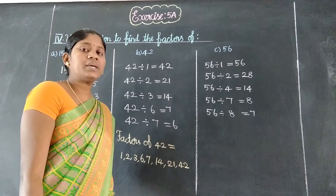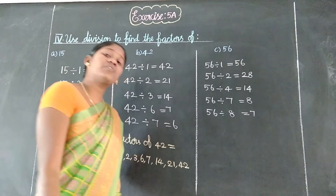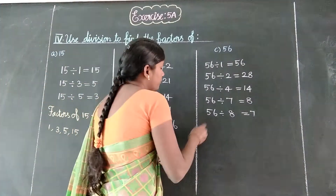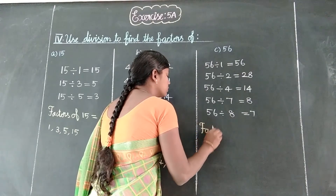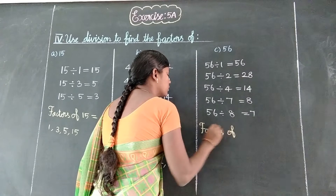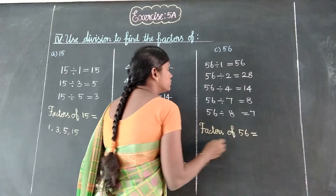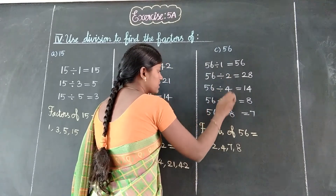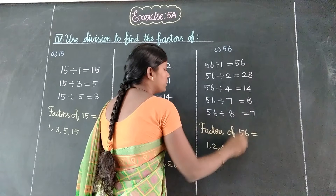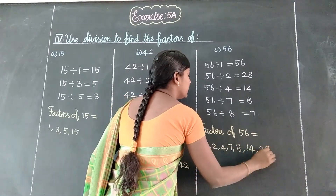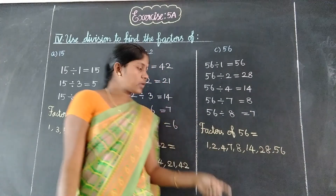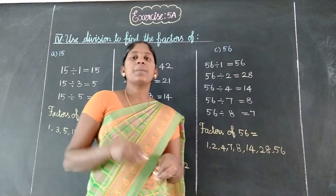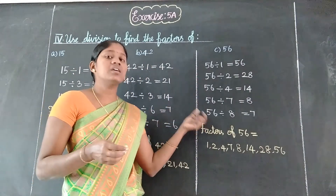9 table — no. 10 table — no. 11 table, 12 table — no. Factors of 56 are: 1, 2, 4, 7, 8, 14, 28, 56.